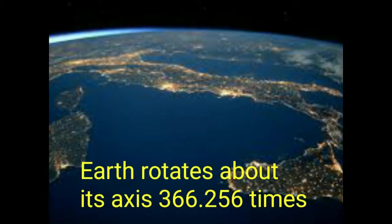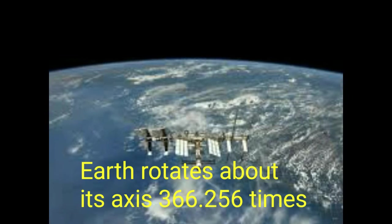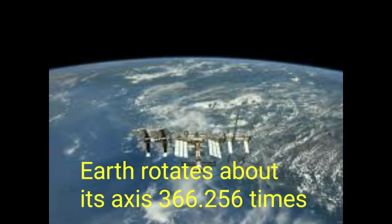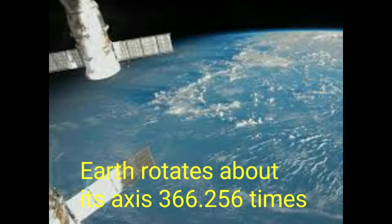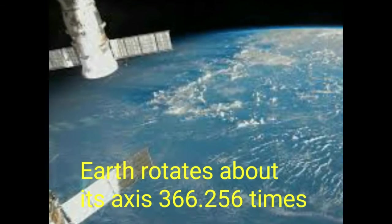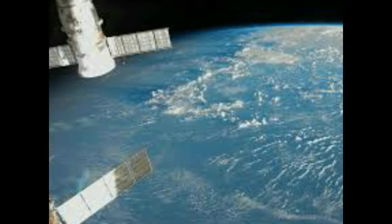During this time, Earth rotates about its axis 366.256 times. That is, a sidereal year has 366.256 sidereal days.